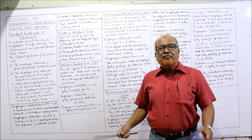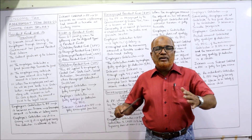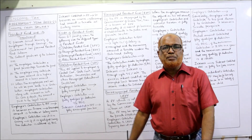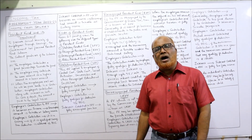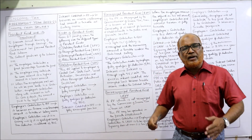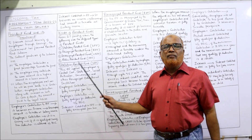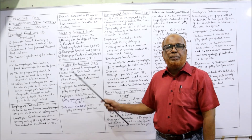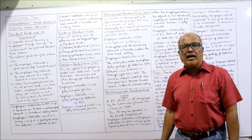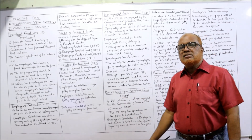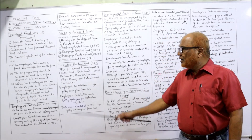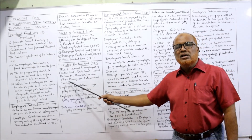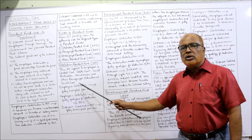From an income tax point of view, provident funds are divided into four categories: Statutory Provident Fund (SPF), Recognized Provident Fund (RPF), Unrecognized Provident Fund (URPF), and Public Provident Fund (PPF). We'll first discuss Statutory Provident Fund. This fund applies to employees of the central government, state government, local authorities, universities, or recognized educational institutions.